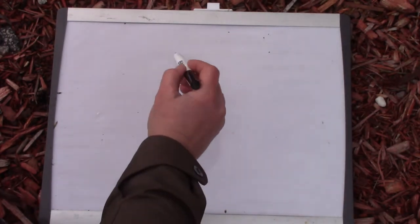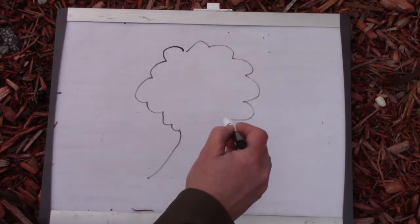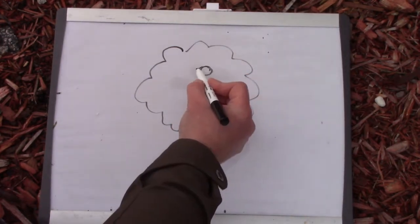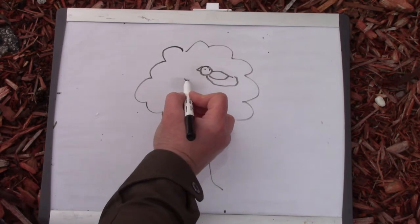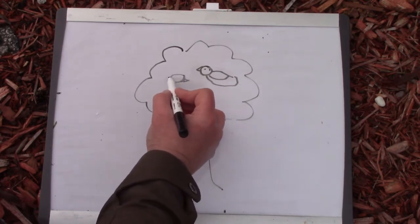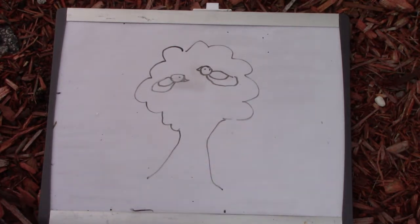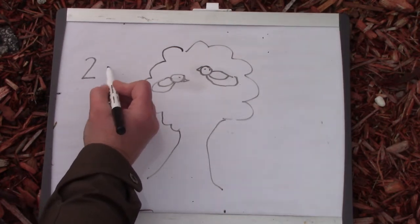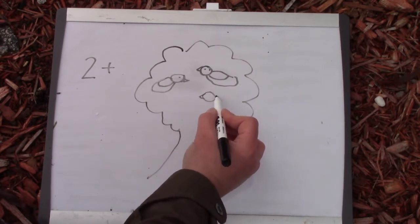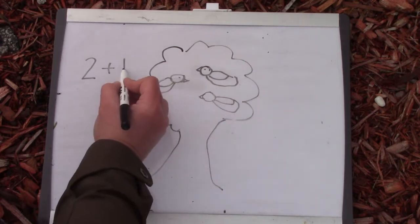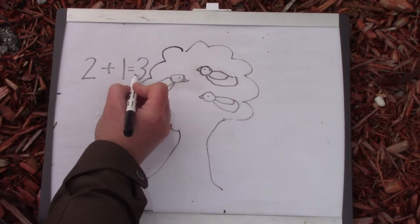Class, you might not have a tree but I am going to draw one today — a very simple tree. I am going to draw two birds because we had two birds in our tree. When we're drawing, it does not have to be perfect. I have two birds in my tree. Two. And then one more came along. One, two, and then one more.